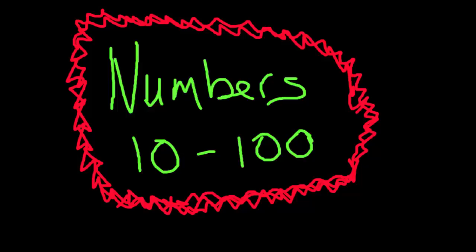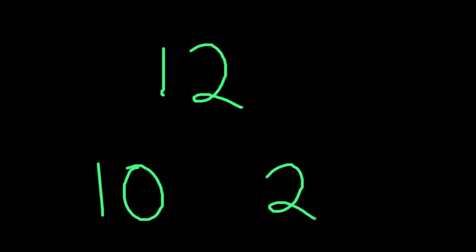If you can count to 10, you can actually count the whole way to 99 once you understand the pattern and how it works. To say 11, you actually say 10 and then 1: 十一. To say 12, it would be 十二. 13 would be 十三.